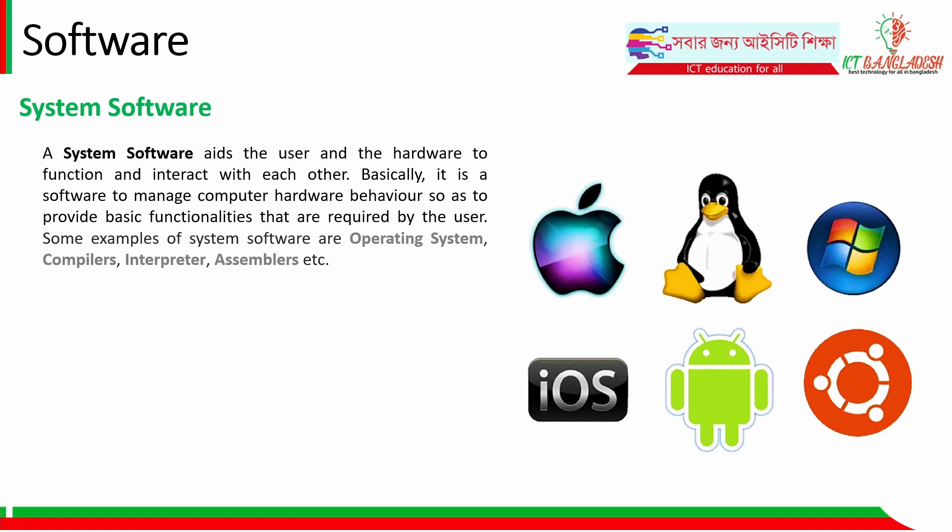Some examples of system software are: operating system, compiler, interpreter, and assemblers. Operating systems such as Windows, Linux, and Mac OS are common examples.